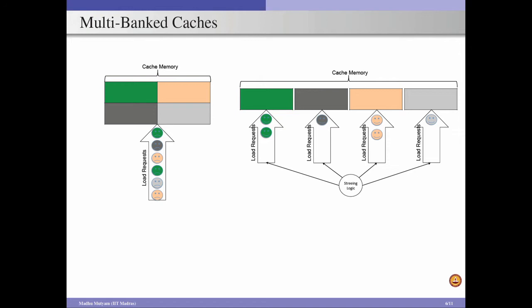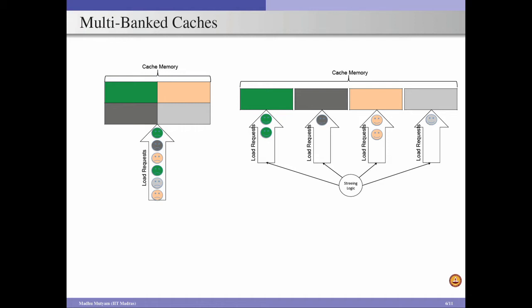With four banks, the cache can service four requests simultaneously, each bank with one port, without increasing access energy or access time. Multiple banks service requests in parallel, improving overall bandwidth. The Intel Core i7 processor supports four banks for L1 cache and eight banks for L2 cache, and as mentioned, this multibanking reduces power consumption.